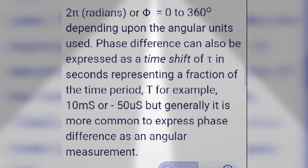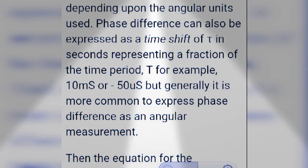Phase difference can also be expressed as a time shift of τ in seconds, representing a fraction of the time period T. For example, 10 milliseconds or 50 microseconds. But generally it is more common to express phase difference as an angular measurement.